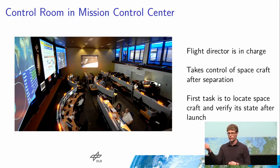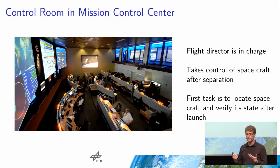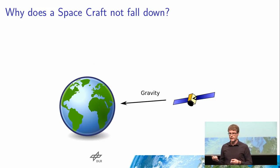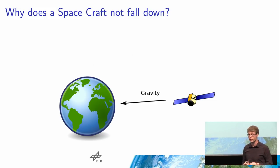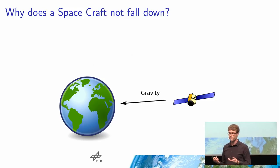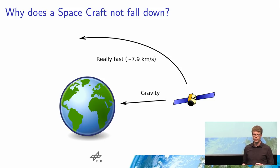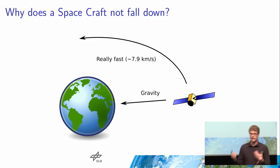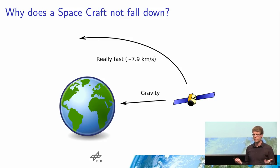Es gibt aber ein paar kleine Subtilitäten. Direkt nach der Trennung ist das Raumfahrzeug irgendwo – wir wissen ungefähr, wo es ist, wir haben das ja geplant, aber wir wissen nicht die genaue Position. Wir müssen erstmal das Signal anpeilen, das Ding im Raum finden und eine Verbindung herstellen. Dazu müssen wir erstmal über Orbitalmechanik sprechen: warum fällt ein Raumfahrzeug nicht runter? Wenn man sich die ISS anguckt, die fliegt in einer Höhe von circa drei bis vierhundert Kilometern. Dort ist die Schwerkraft ungefähr 90 Prozent derer auf der Oberfläche. Man braucht eine gewisse horizontale Geschwindigkeit, um nicht auf die Erde zu fallen – circa 7,9 Kilometer pro Sekunde. Wenn man höher ist, braucht man weniger Geschwindigkeit.